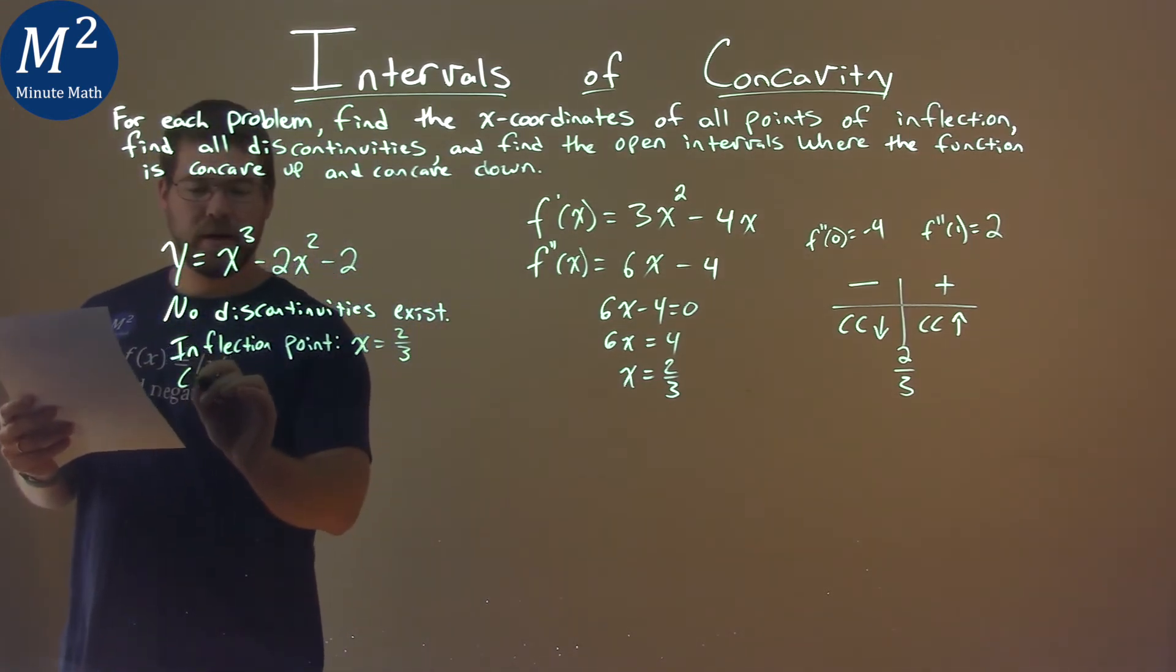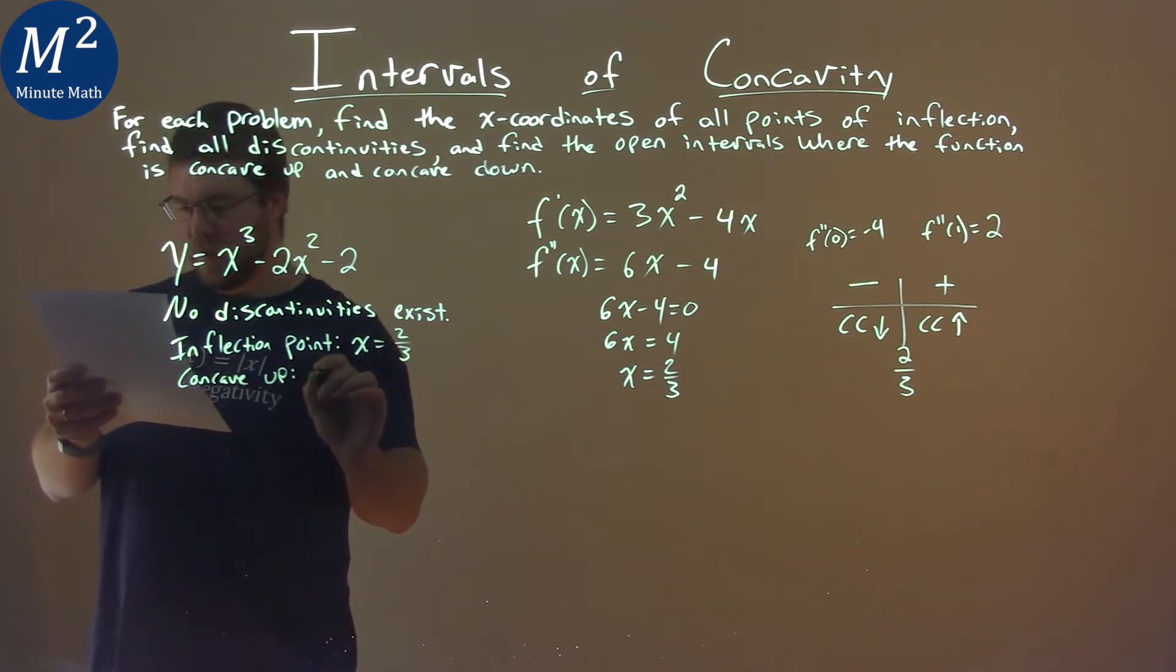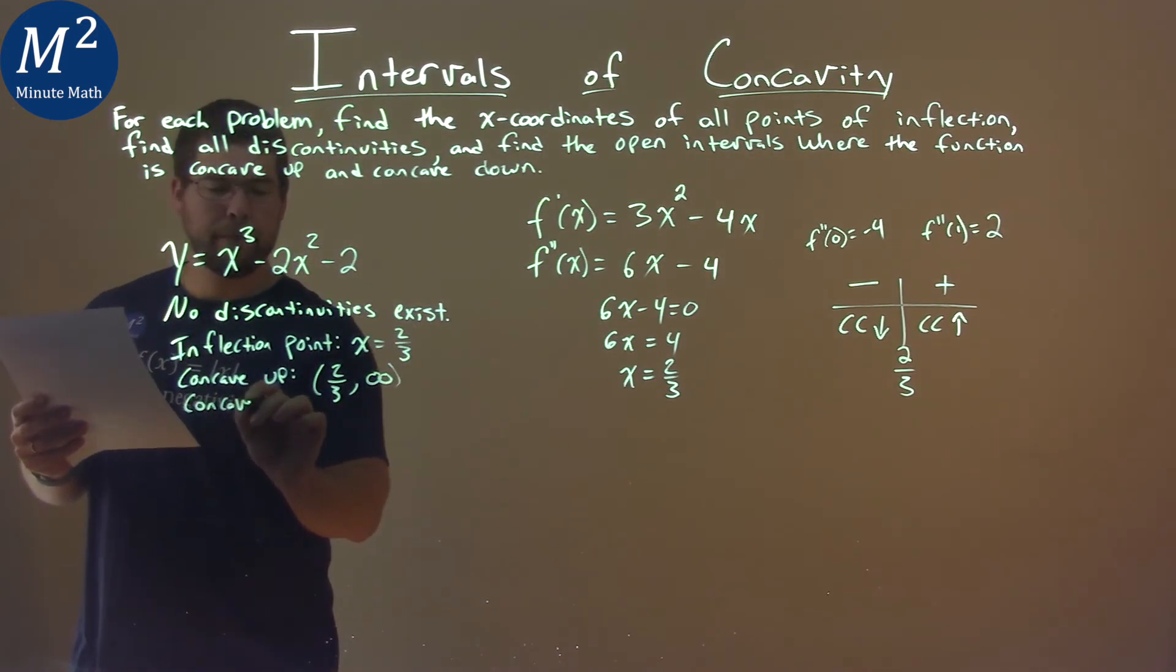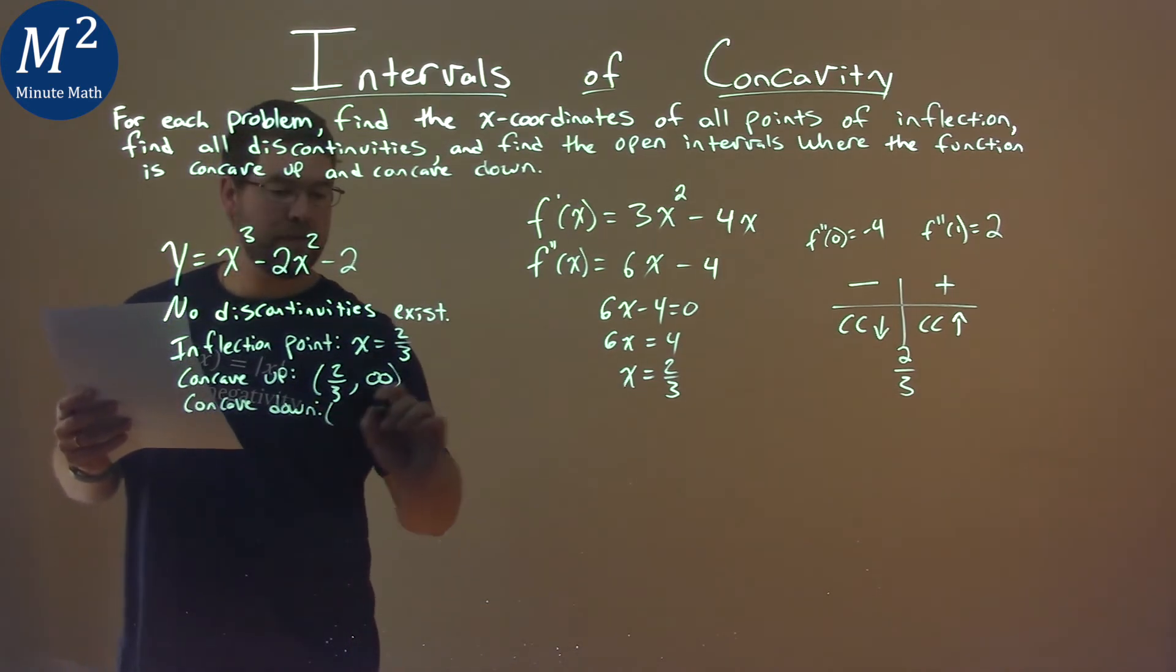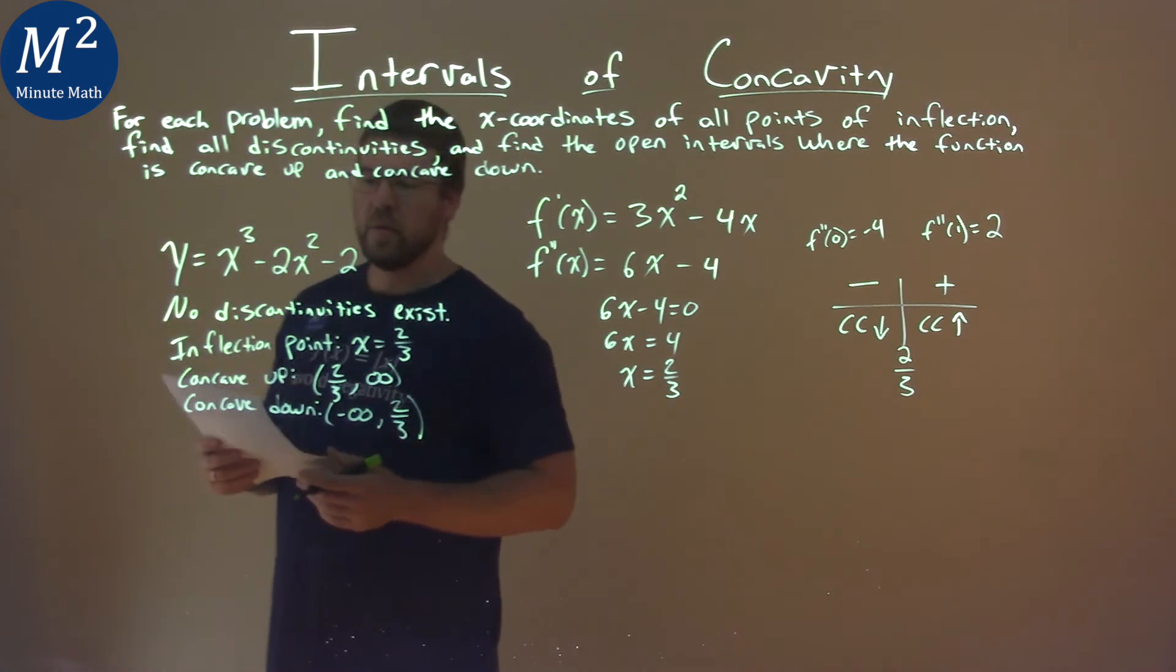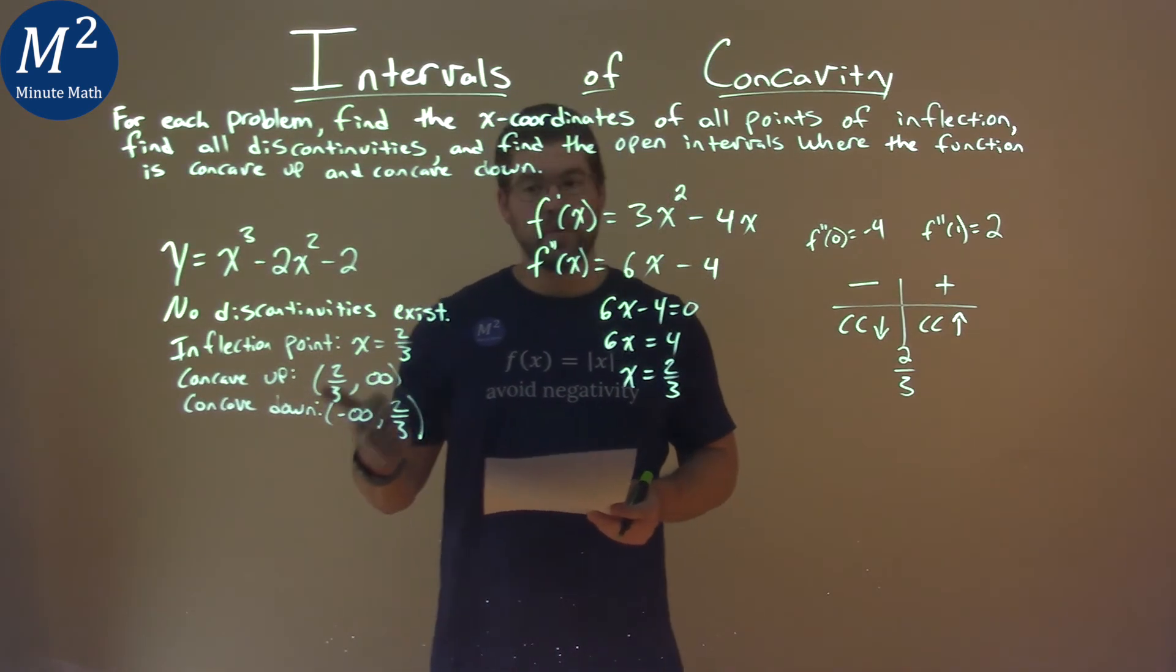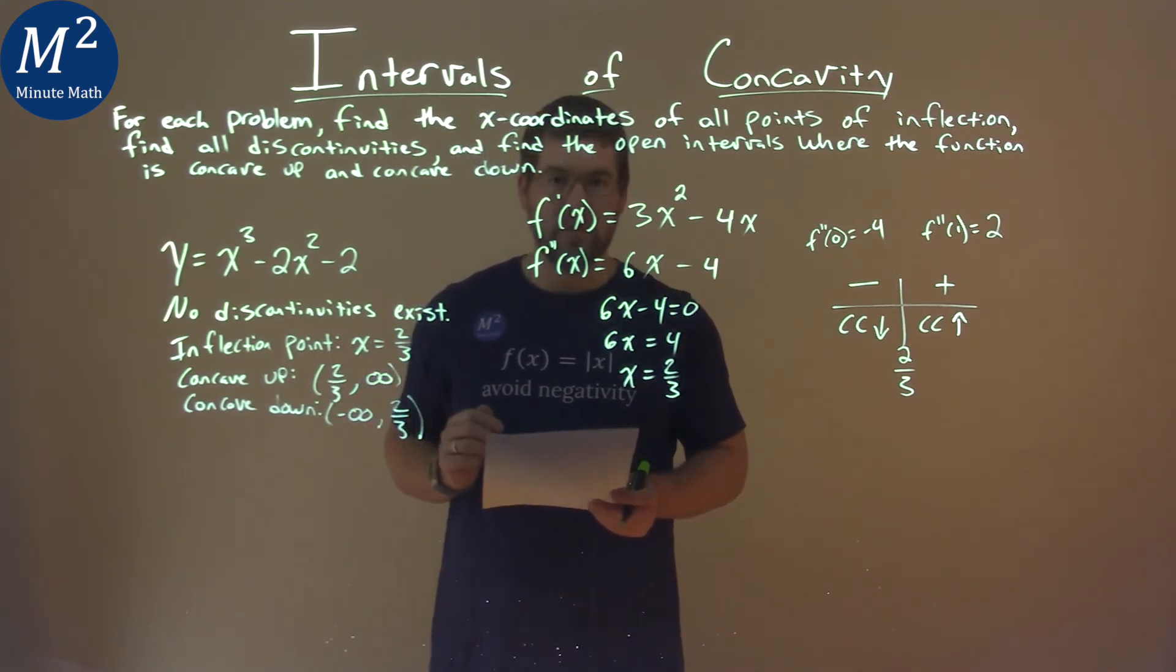For concavity, we're concave up on the interval from 2/3 to positive infinity, and we're concave down on the interval from negative infinity to 2/3. So our final answer: no discontinuities exist, inflection point is x = 2/3, concave up from 2/3 to infinity, and concave down from negative infinity to 2/3.